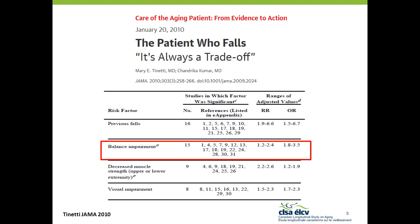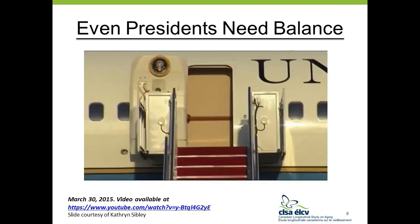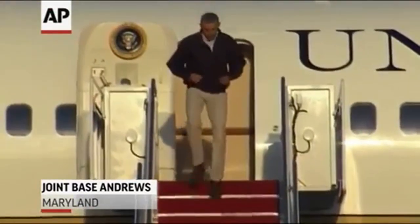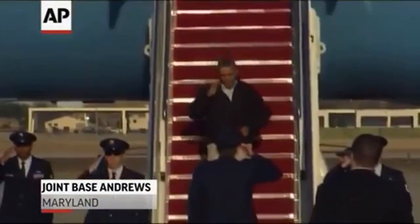So why focus on balance? We know that balance impairment is one of the strongest and most consistently identified fall risk factors. From a well-cited article in the Journal of the American Medical Association, looking at the top fall risk factors, balance impairment is the second most commonly identified fall risk factor after history of a previous fall. This makes sense, as most falls actually occur from a loss of balance while walking — and this is true for all of us, not just older adults, as demonstrated by a video of President Obama successfully using a balance recovery reaction to avoid a fall.